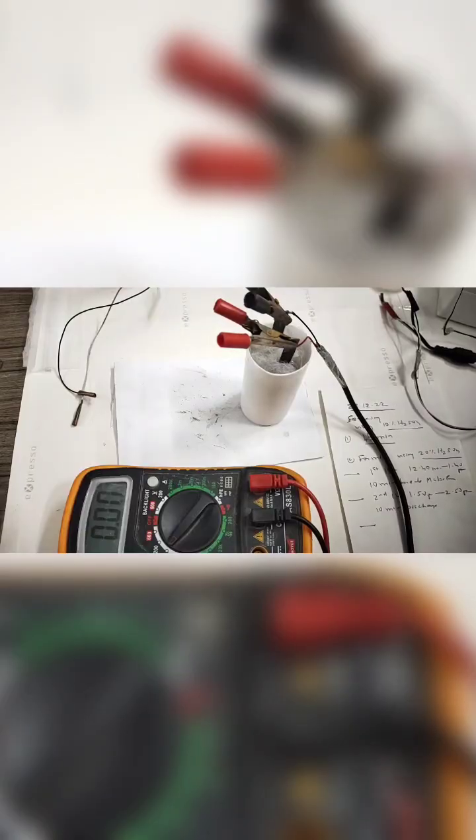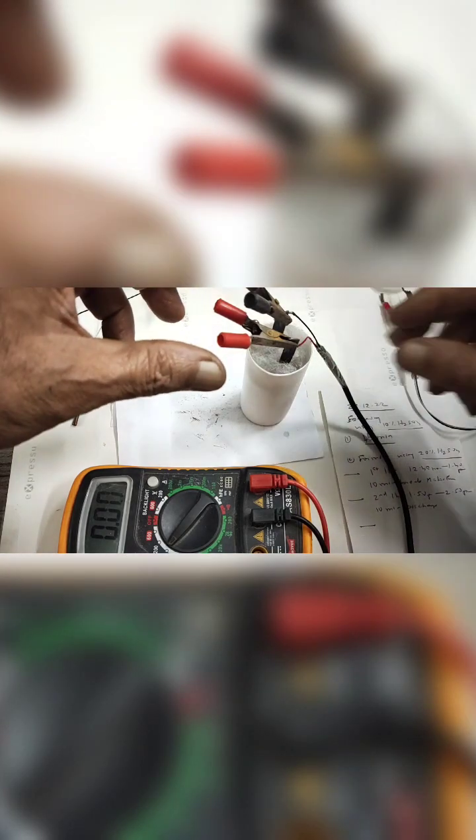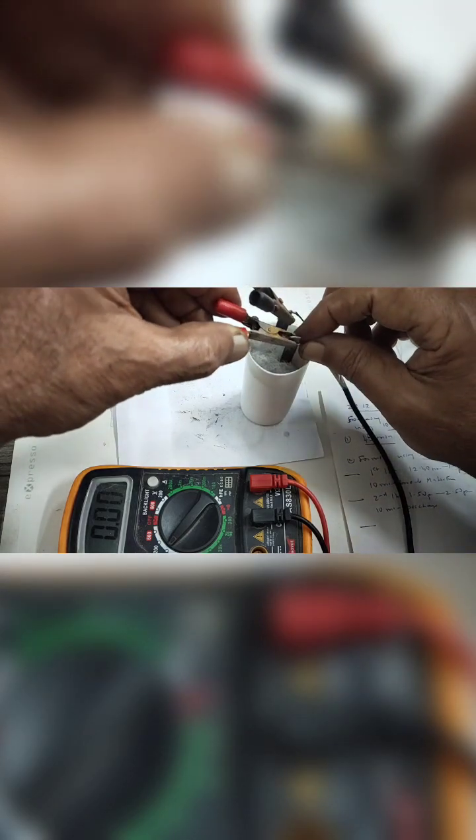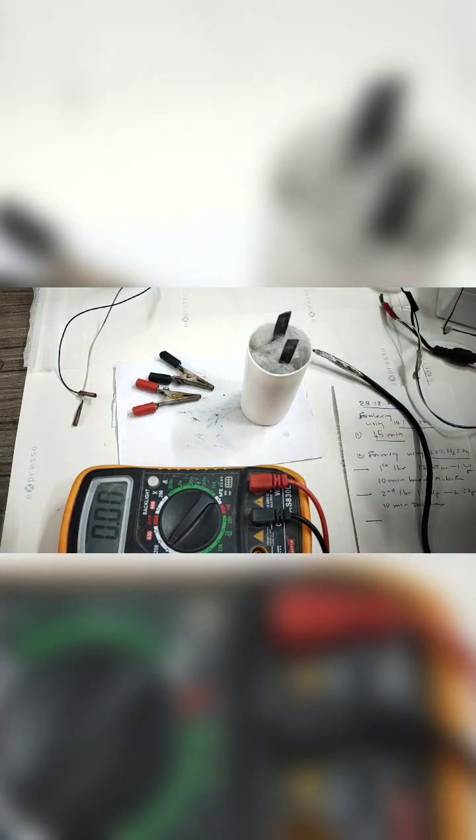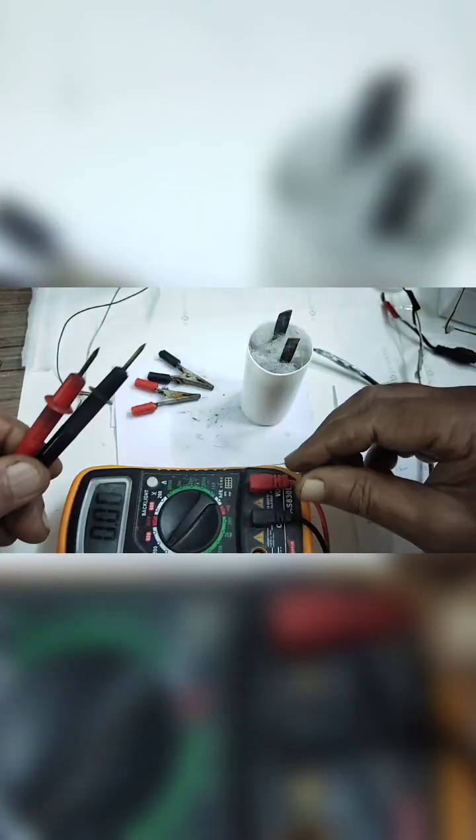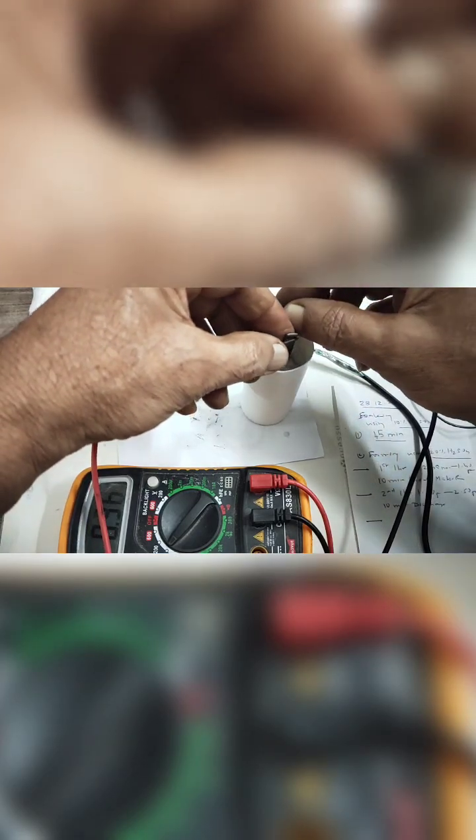Friends, this is after second forming 1 hour. I am going to disconnect the current, the DC current which I have been charging for this battery. I disconnected through external multimeter. We will see what is the volt it has attained. This is the positive, this is the negative side.